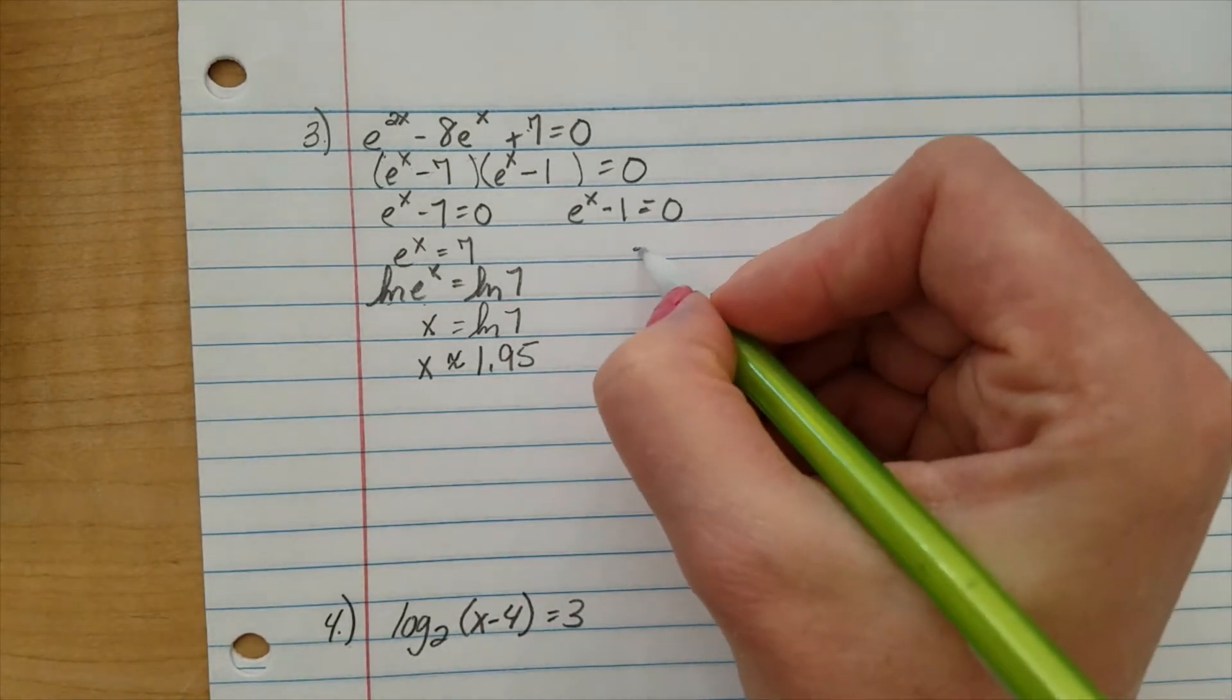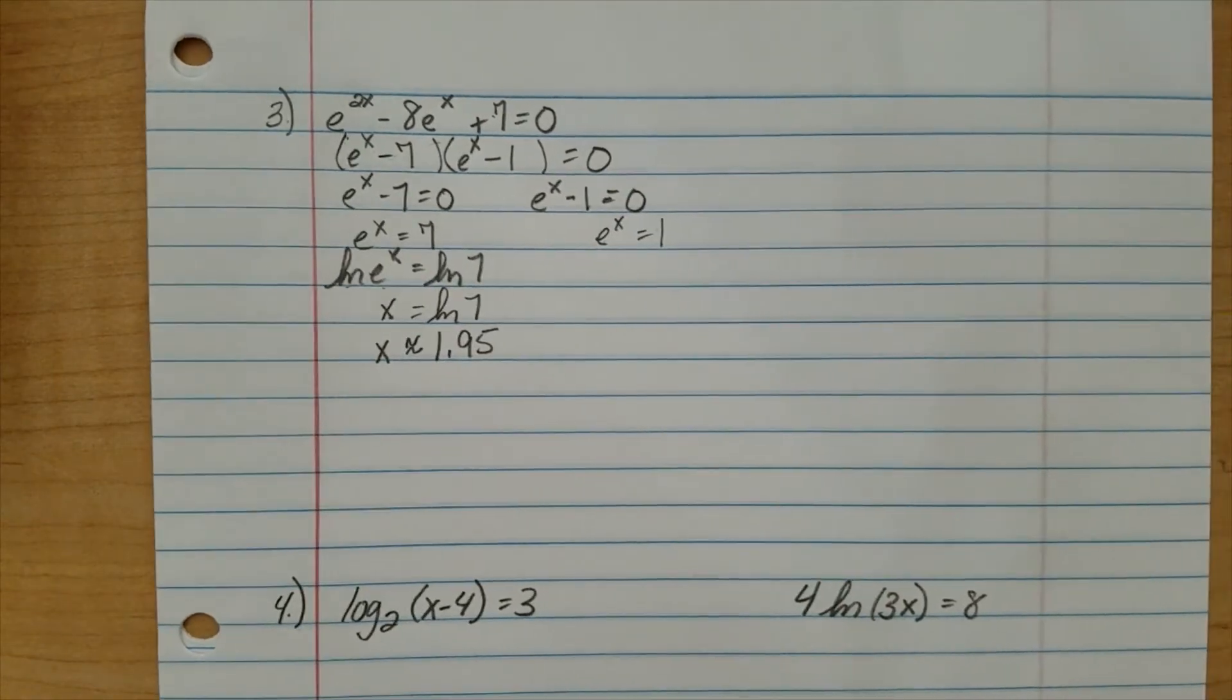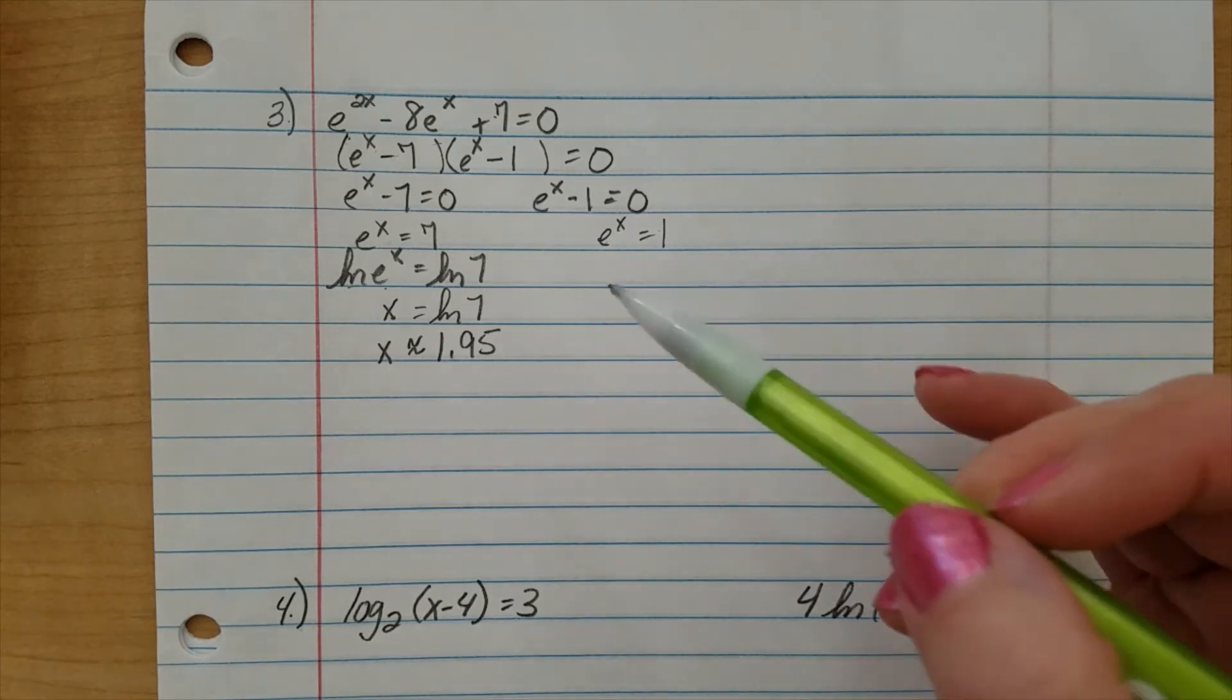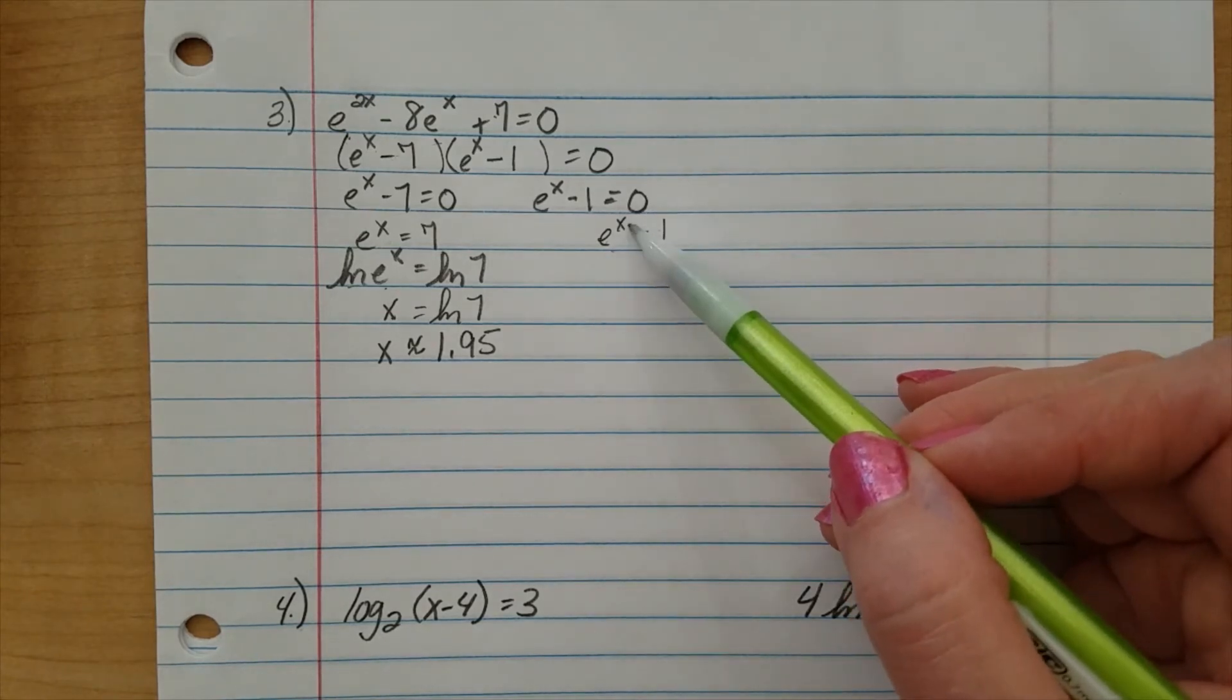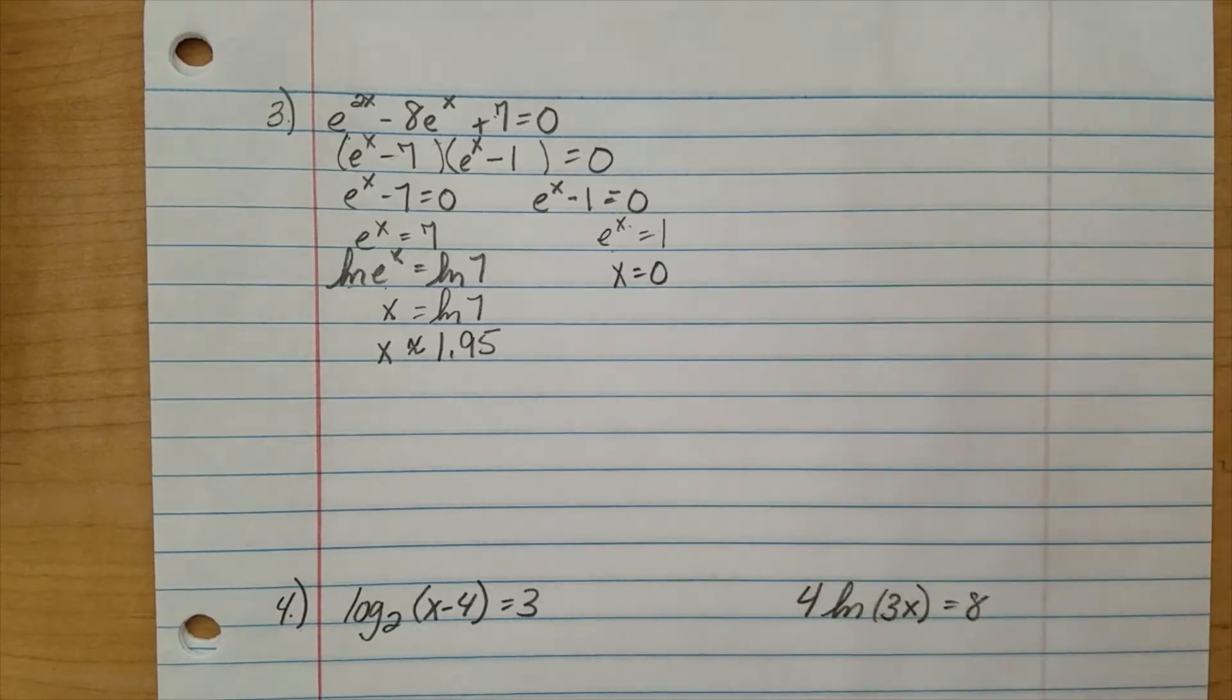Here, e to the x equals 1. You could take the natural log of both sides. It's going to get you the same answer, but let's just stop and think about this. Any number raised to the zero power is 1. x equals 0.